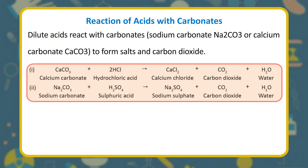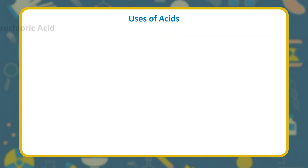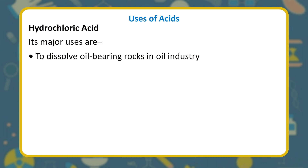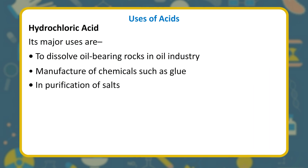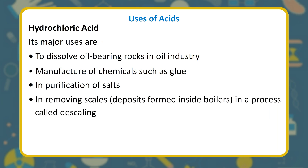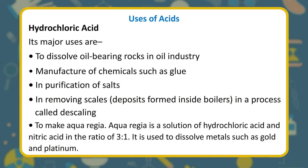Uses of hydrochloric acid: its major uses are to dissolve oil-bearing rocks in the oil industry; manufacture of chemicals such as glue; purification of salts; removing scale deposits formed inside boilers in a process called descaling; and to make aqua regia — a solution of hydrochloric acid and nitric acid in the ratio 3:1 — which is used to dissolve metals such as gold and platinum.